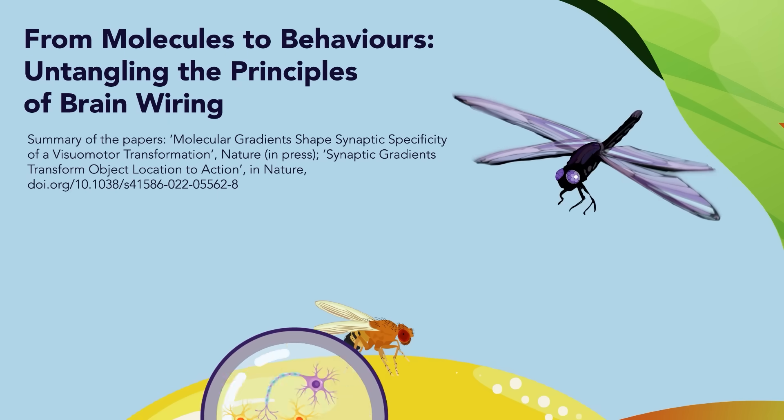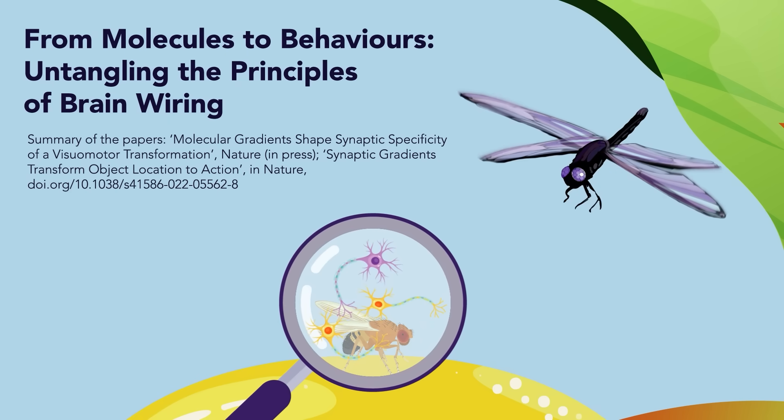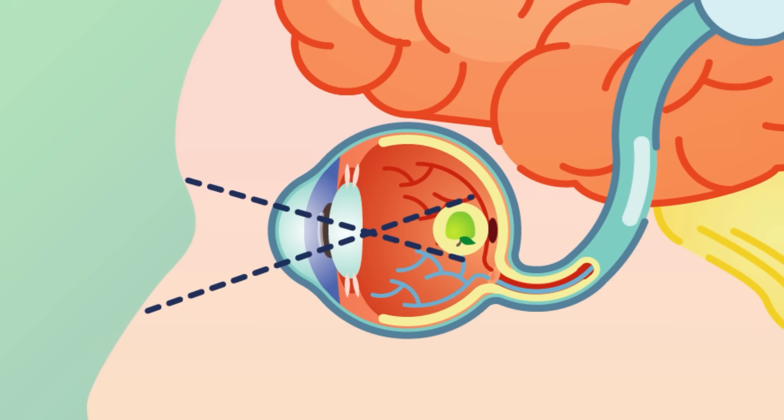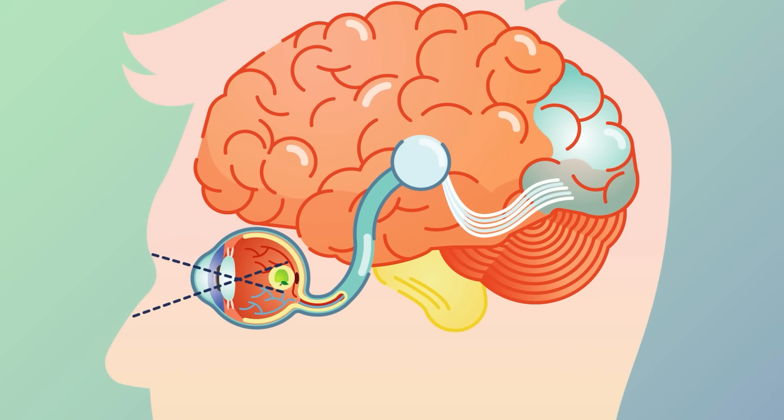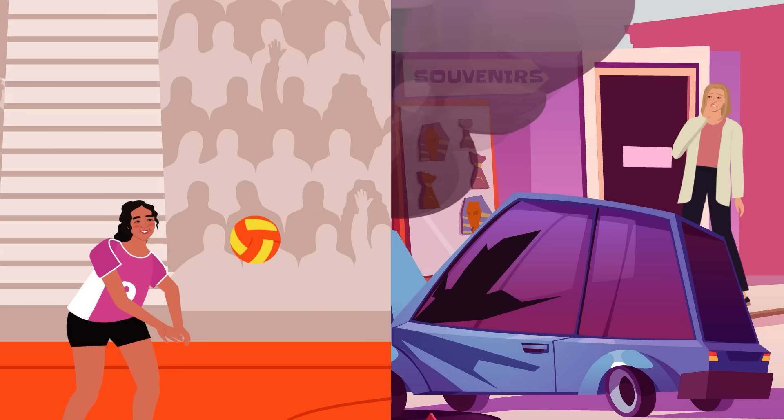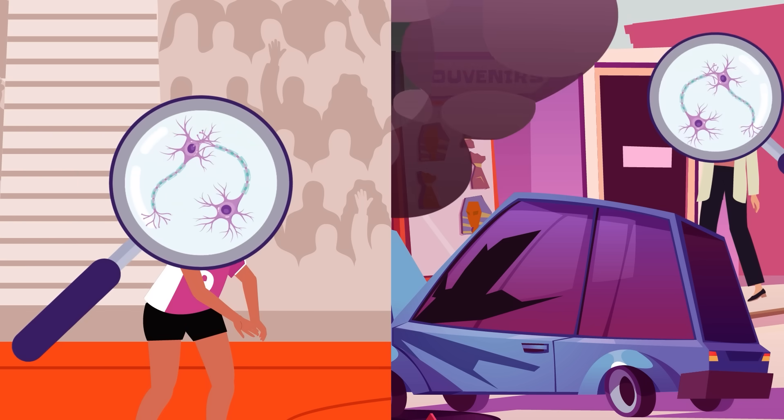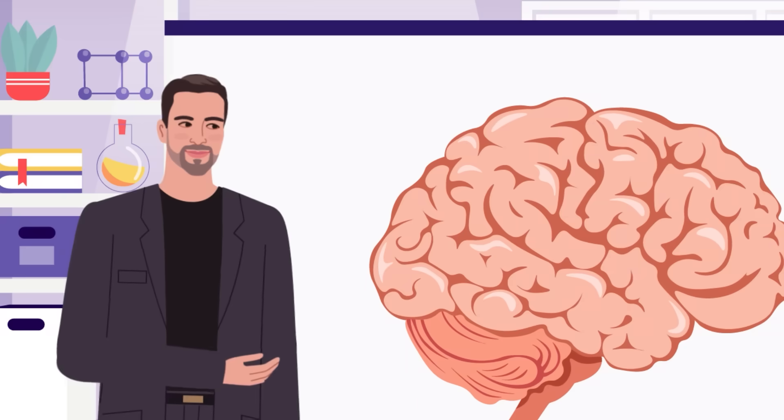From molecules to behaviors: untangling the principles of brain wiring. How does the brain translate what we see into what we do? Every action we take, from catching a ball to avoiding danger, relies on precise connections between neurons.